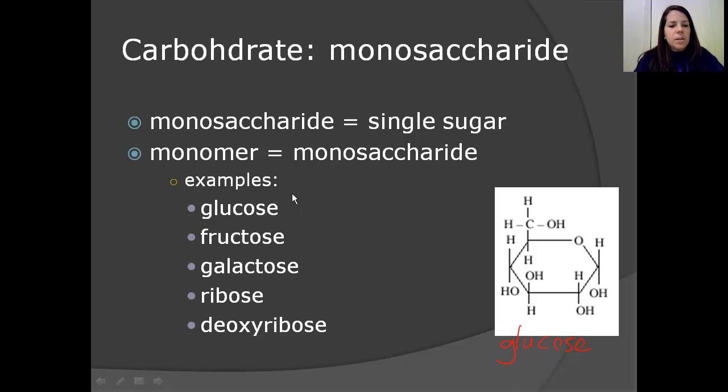Now, I'm going to draw your eye over here to all the different examples that we have of different monosaccharides. We've got glucose, fructose, galactose, ribose, and deoxyribose. First of all, let's recognize they all end in OSE. And they're all sugars.